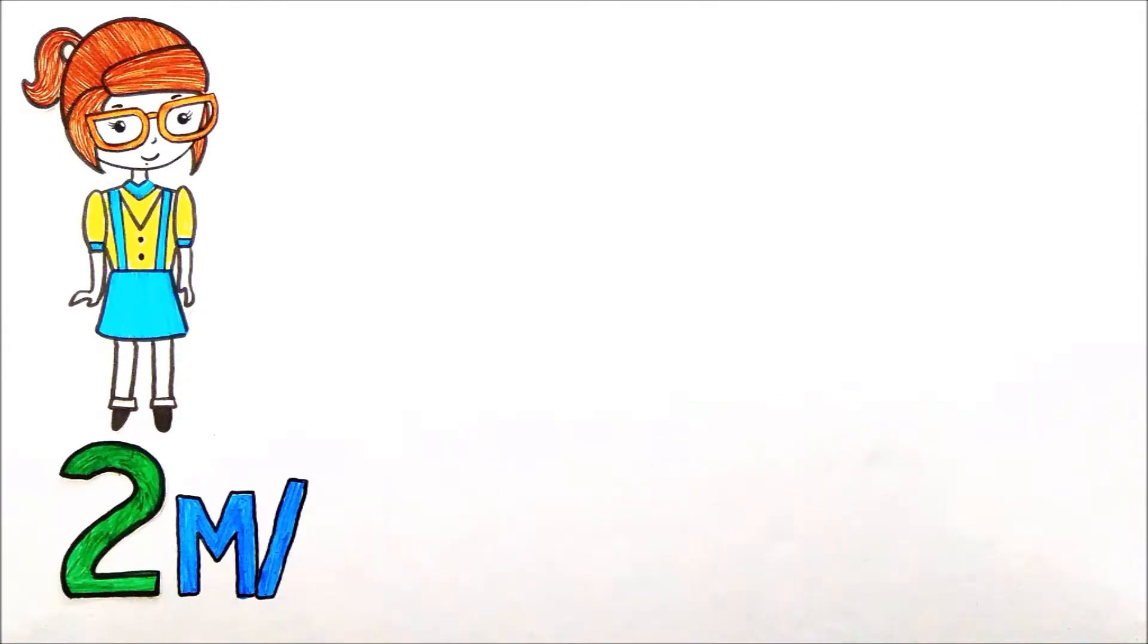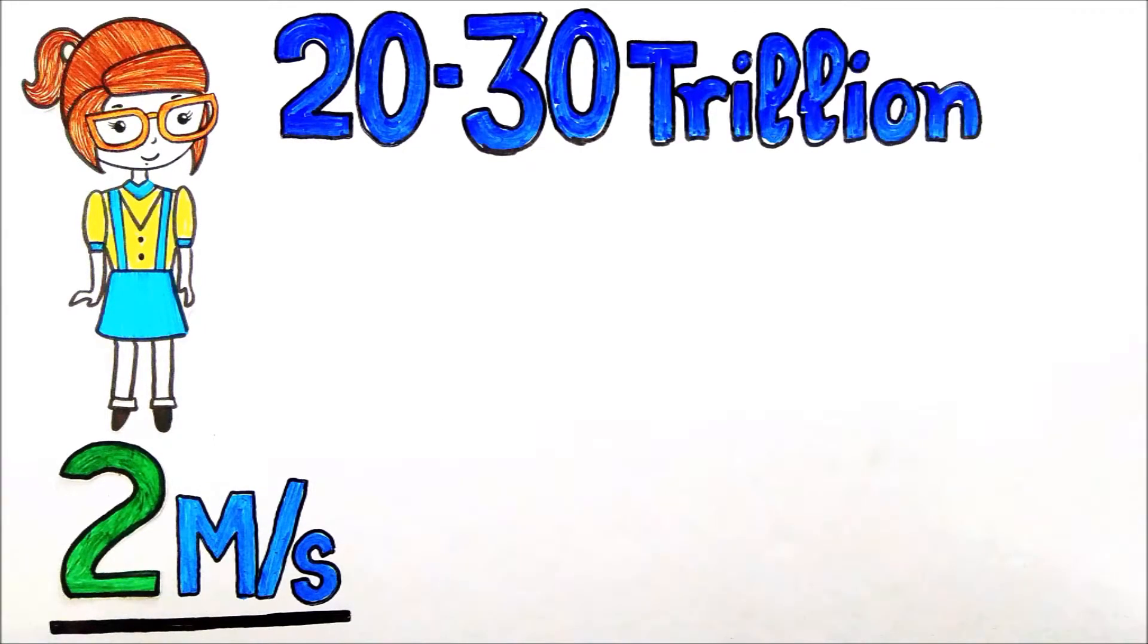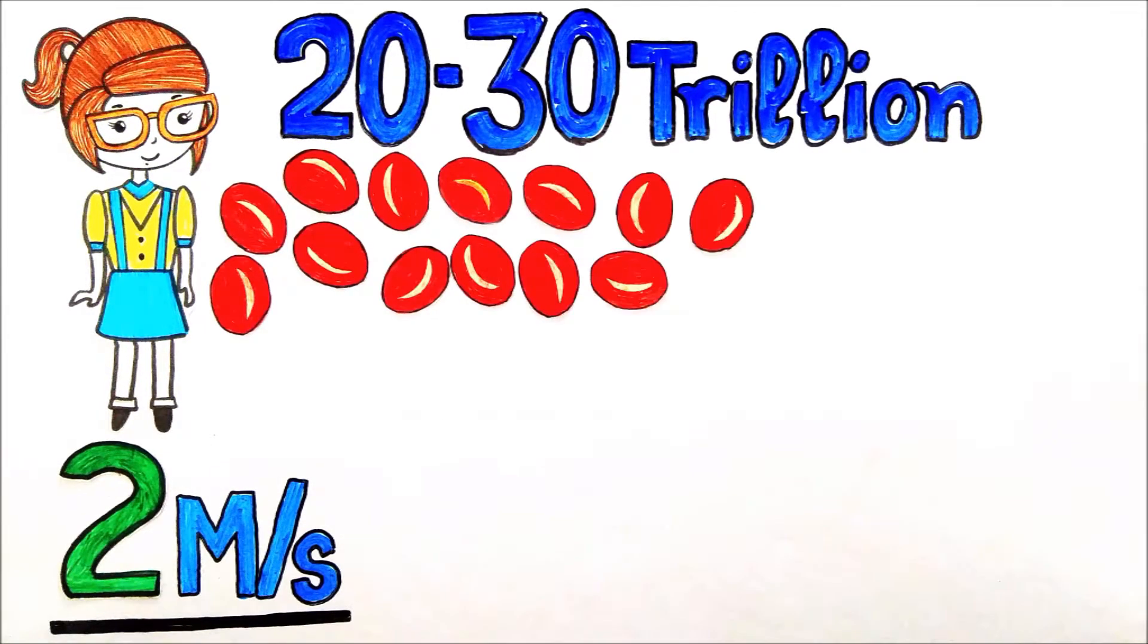In healthy adults, the bone marrow produces 2 million RBCs per second. This number may seem big, but when you have to maintain 20-30 trillion RBCs in body, then this number is really small.